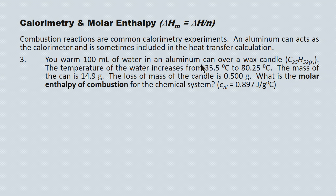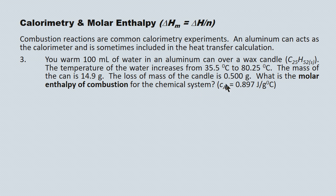You have 100 mL of water in an aluminum can over a wax candle. The temperature increases from 35.5 to 80.25 degrees Celsius. The mass of the aluminum can is 14.9 grams, and the loss of mass of the candle is 0.500 grams. The question asks for the molar enthalpy of combustion for the chemical system, and also provides the specific heat capacity for aluminum — so without saying so directly, the question is inviting you to do an energy calculation on both the water and the aluminum can.